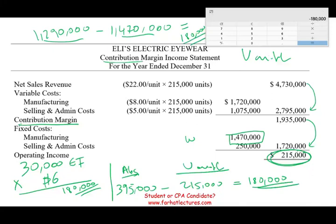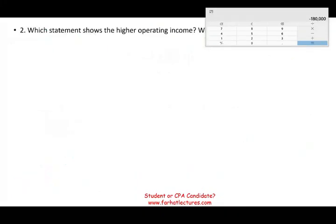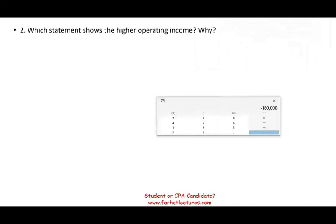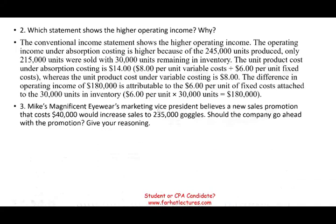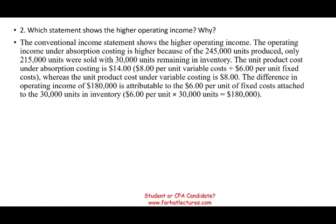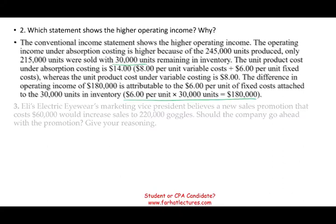So the $180,000 difference reconciles perfectly — it appears in all three calculations. That is the difference between the two methods. Absorption costing shows a higher operating income because 30,000 unsold units remain in inventory, each carrying $6 of fixed manufacturing overhead that is deferred to the balance sheet rather than expensed.